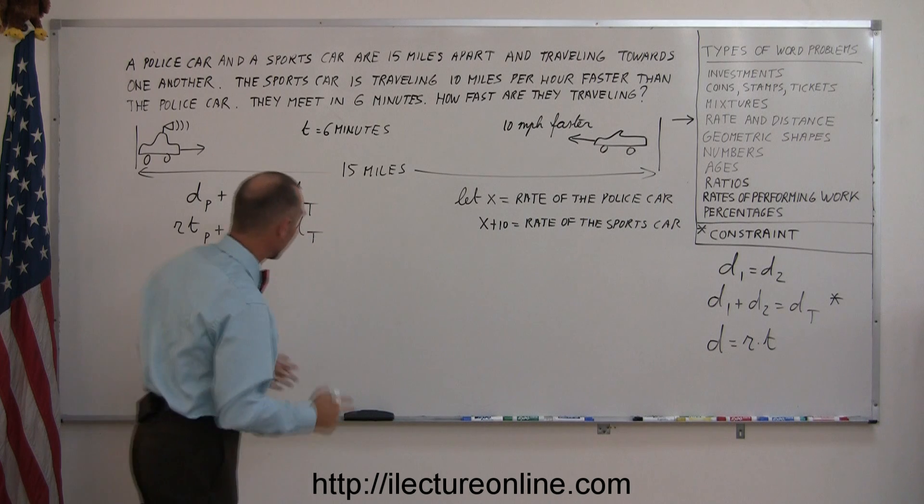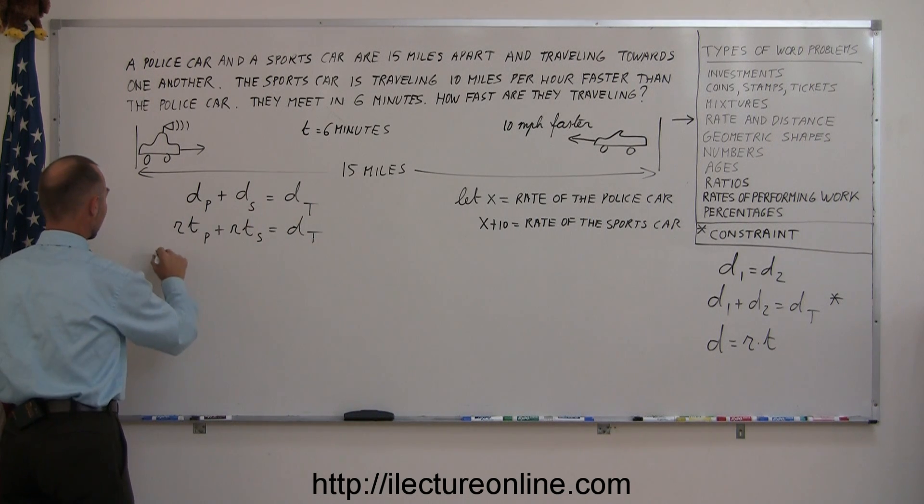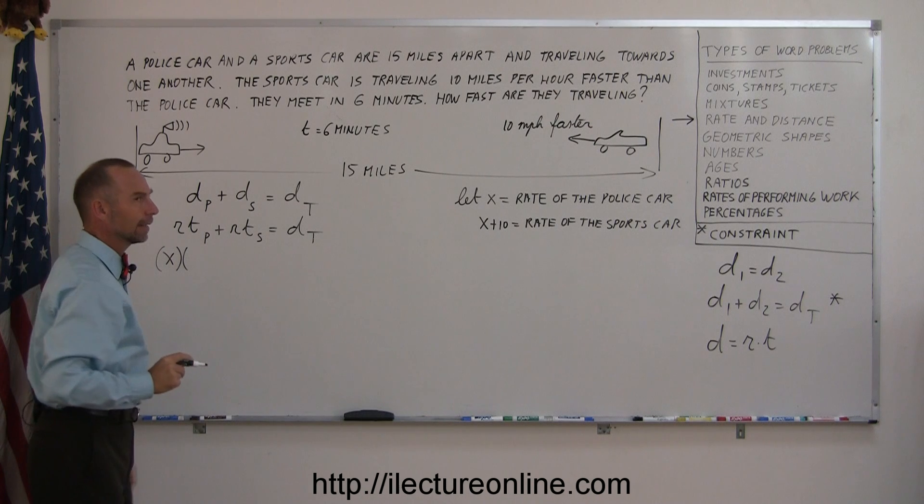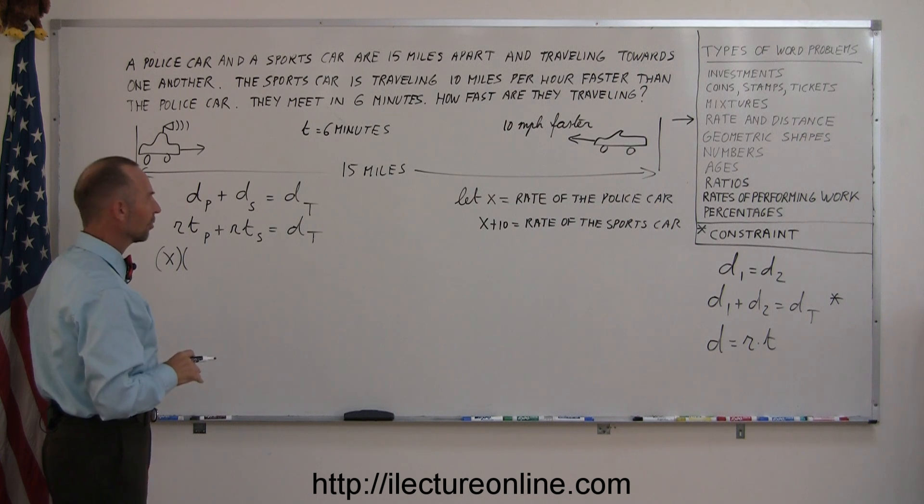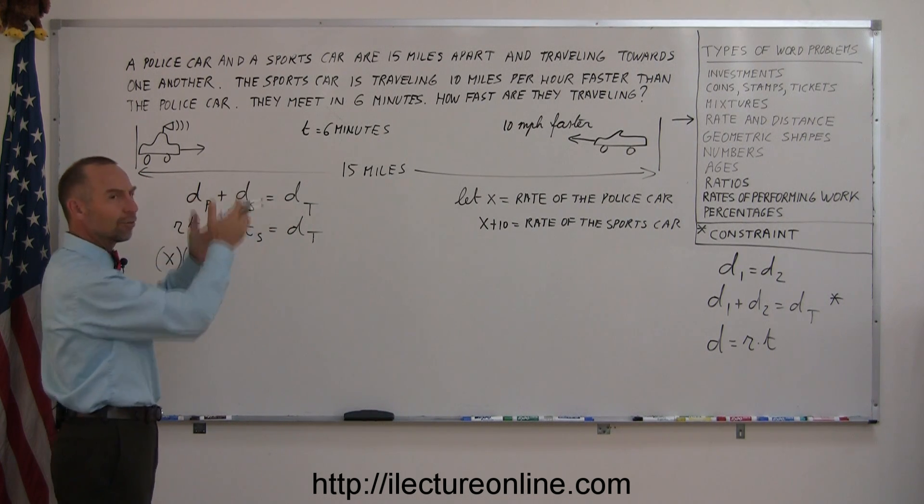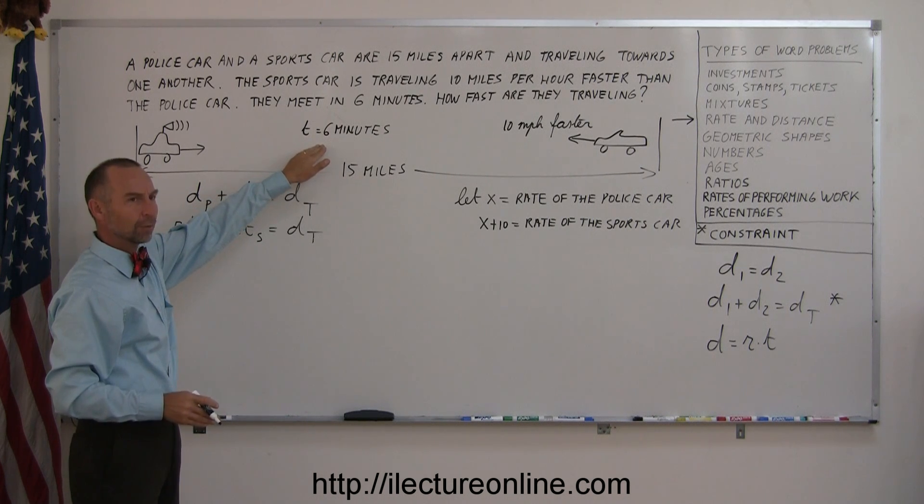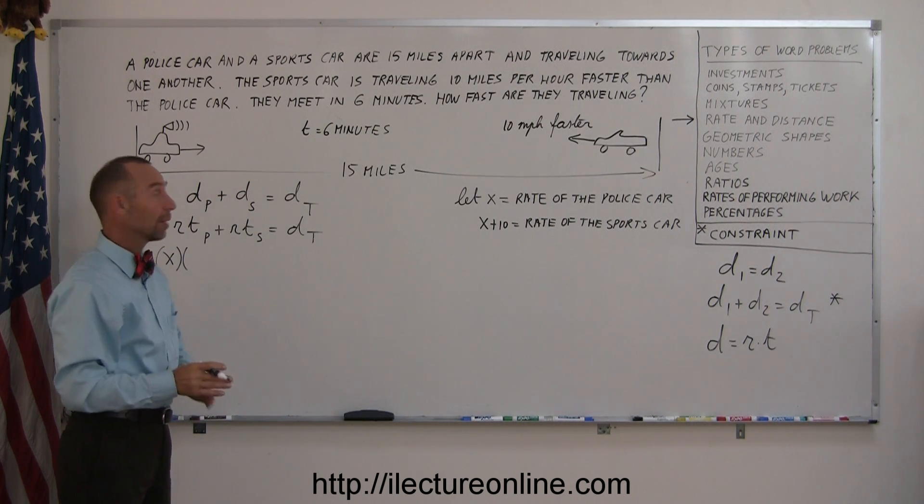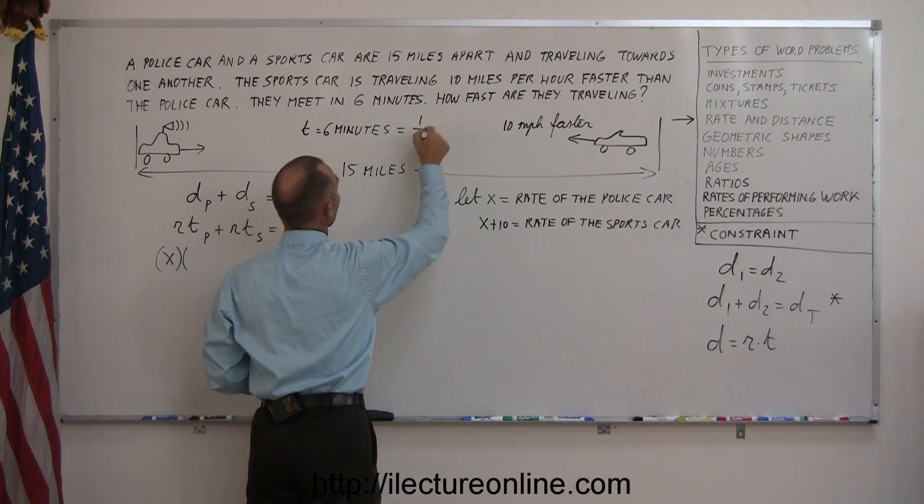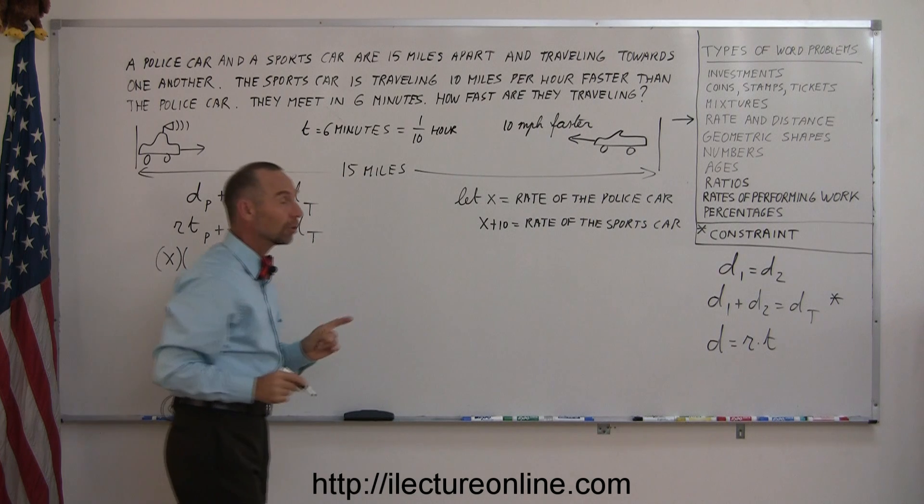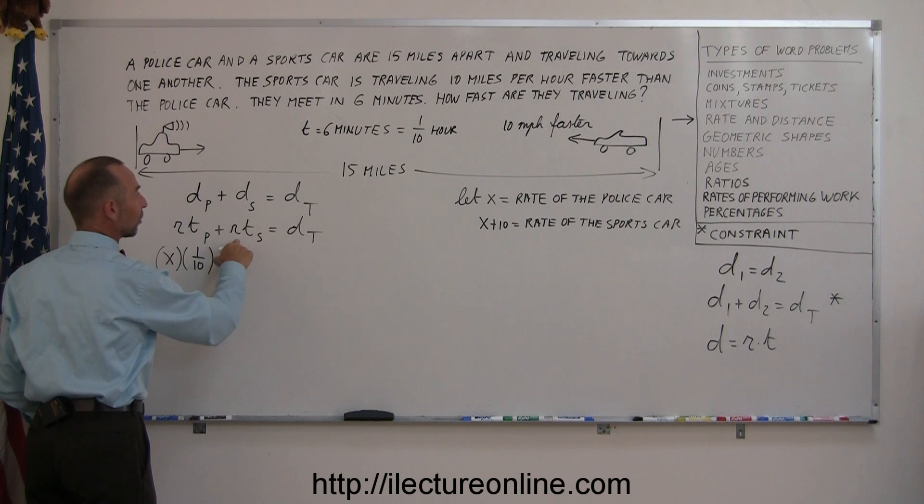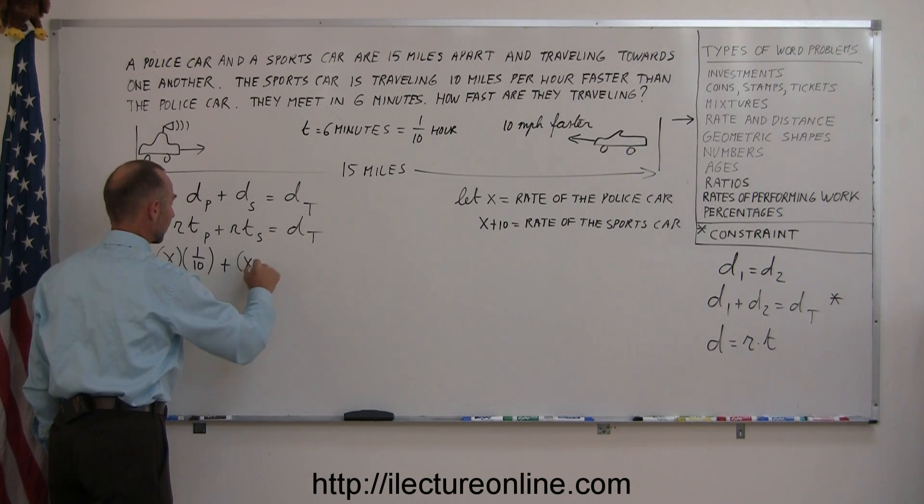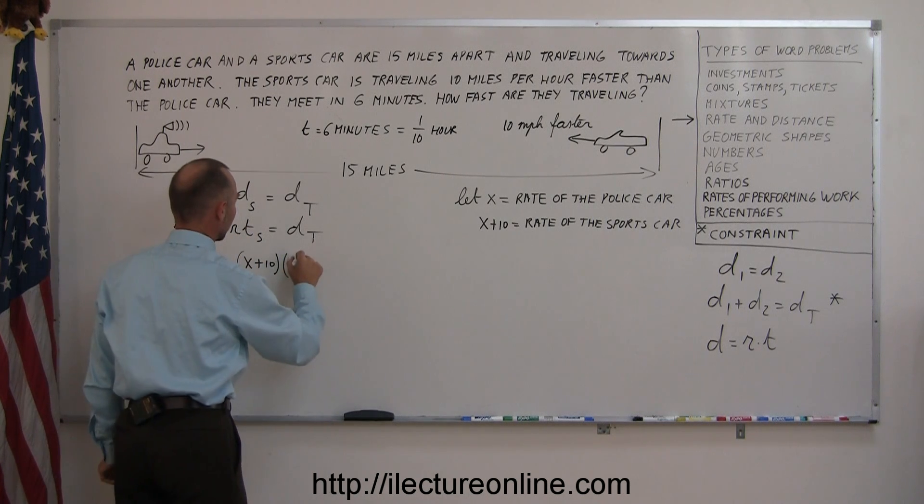Now we're ready to plug all that into our equation. So the rate of the police car is X. The time of the police car is... Should we put six minutes down or should we convert that to hours? Since the rate we use is and the distance we use is miles, we should convert the time to hours. And six minutes, there's 60 minutes in an hour, that is the same as one-tenth of an hour. So let's use the proper units here. So instead of six minutes, we're going to put in there one-tenth of an hour, plus the rate of the sports car, which is X plus 10, times the time of the sports car, which is 1 over 10, equals the total distance traveled, which is 15 miles.